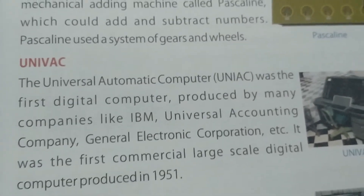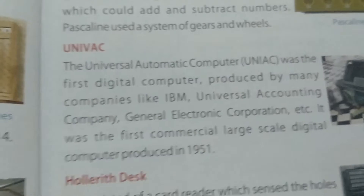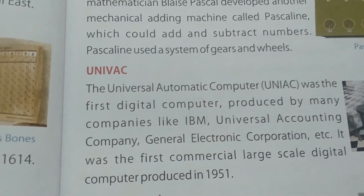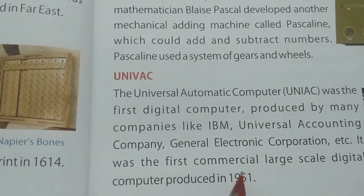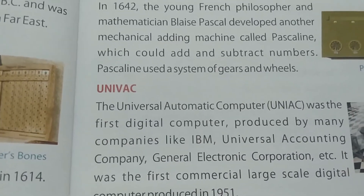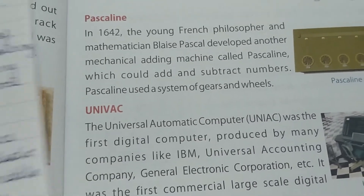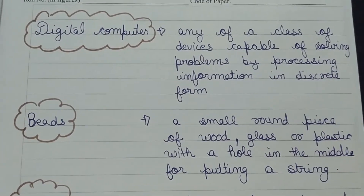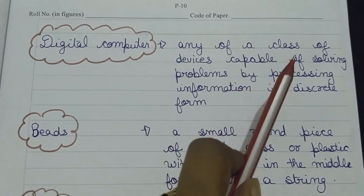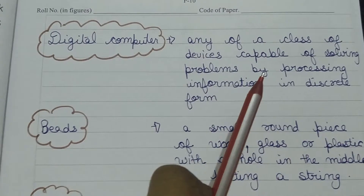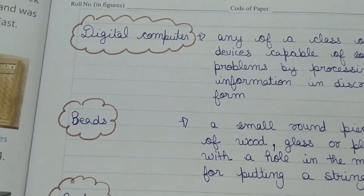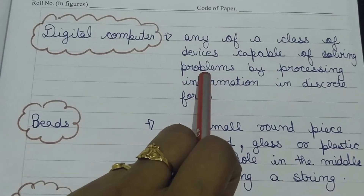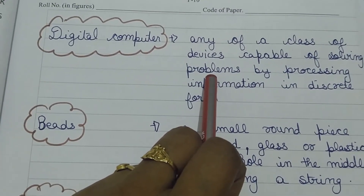So these are your computing devices. Today in class we have covered 5 early computing devices. You have to read this chapter up to UNIVAC, and read it two times. For your reference, I have written a few words which will be helpful while reading this chapter.